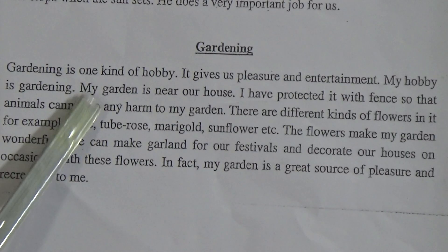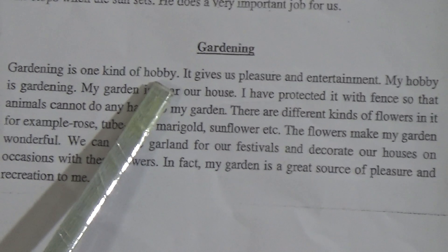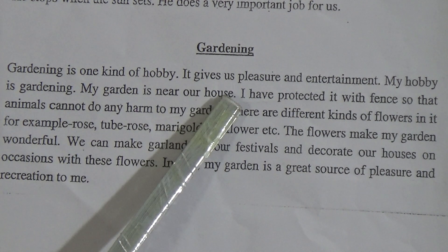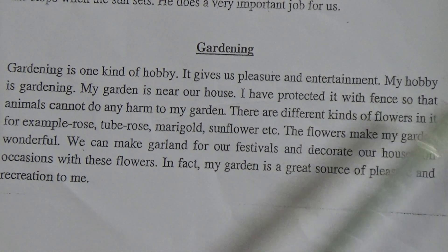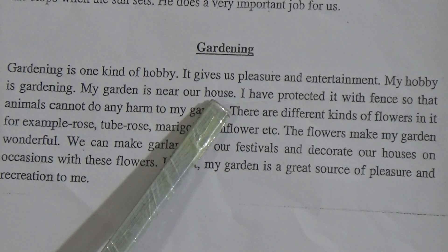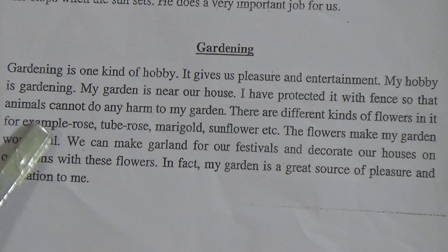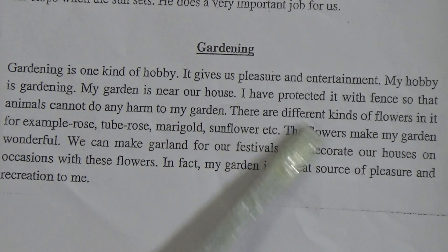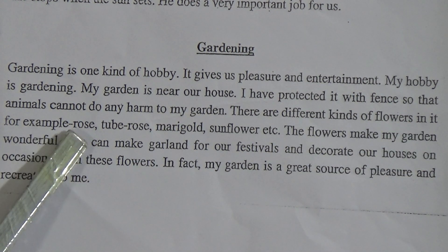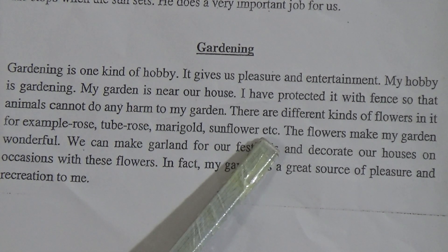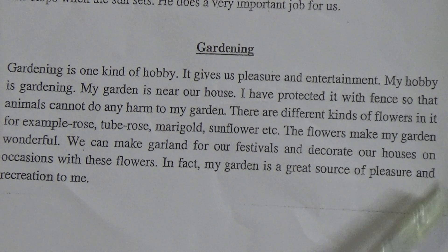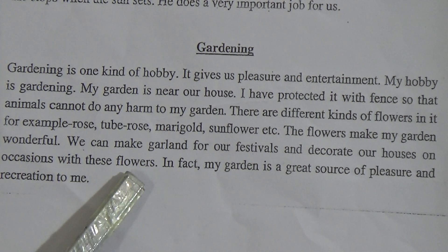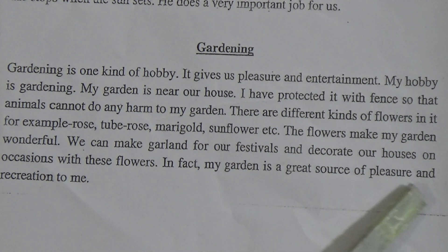The second paragraph is gardening. Gardening is one kind of hobby — a leisure time activity. It gives us pleasure and entertainment. My hobby is gardening. My garden is near our house. I have protected it with a fence so that animals cannot do any harm to my garden. There are different kinds of flowers in it — for example, rose, tube rose, marigold, sunflower, etc. The flowers make my garden wonderful. We can make garlands for our festival and decorate our house on occasion with these flowers. In fact, my garden is a great source of pleasure and recreation to me.